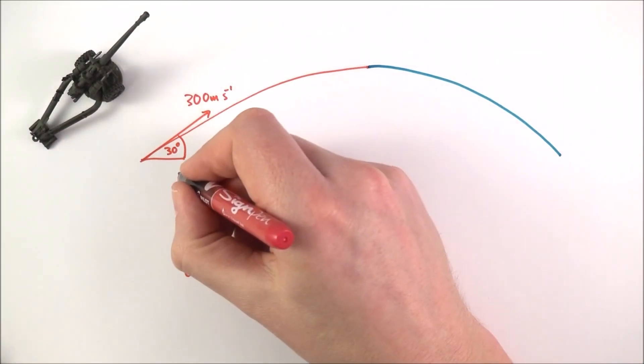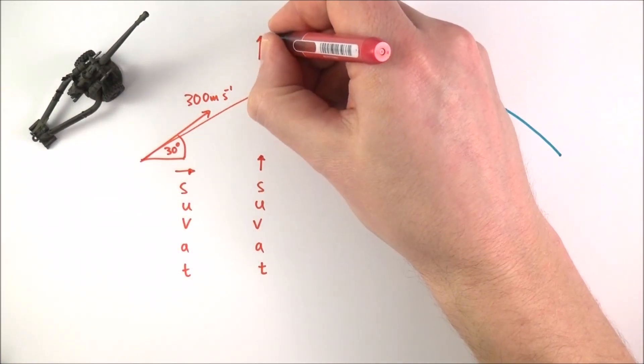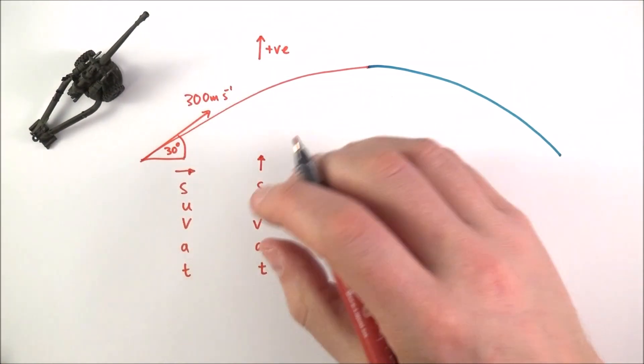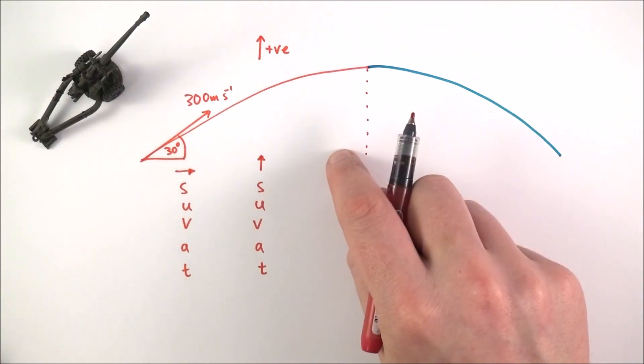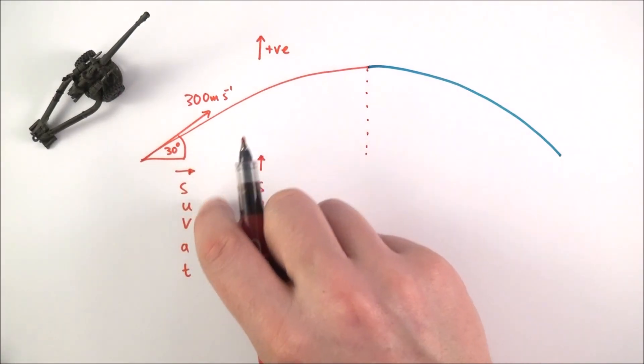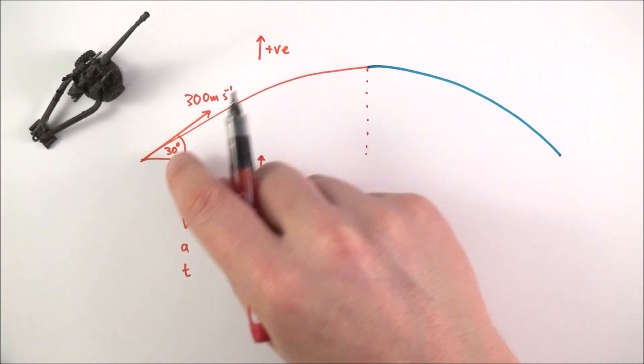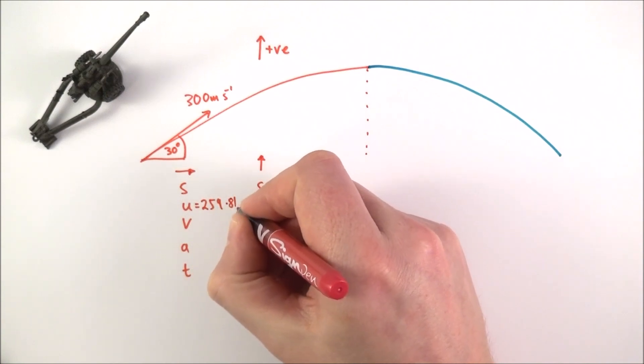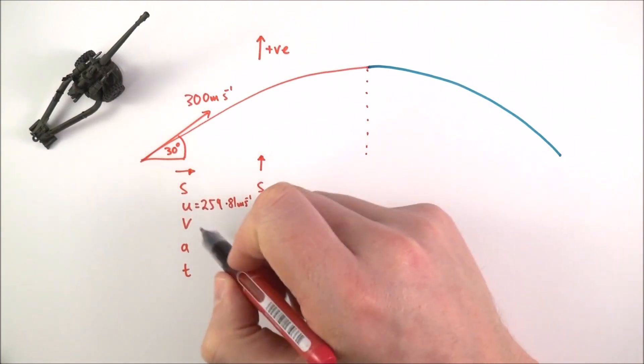I'd like to consider SUVAT both horizontally and vertically, where I'm going to take upwards as my positive direction. I don't know how far it's gone horizontally in the first half of the journey. Do I know the initial velocity u? Yes, because if it's at an angle of 30 degrees to the horizontal, I can use cos 30 times 300, so my initial velocity is 259.81 meters per second. I'm giving it to five significant figures so I don't round down too early.